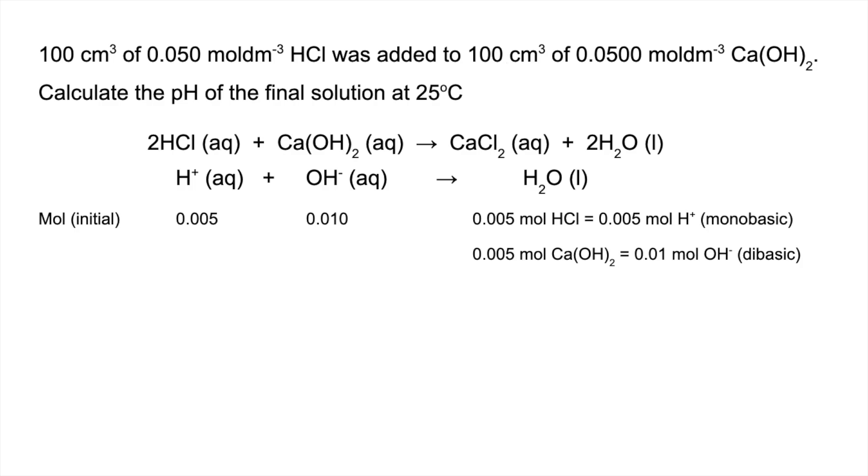So the final moles are going to be 0 of H+ and 0.005 moles of OH-. And because the OH- ions are in excess we need to use KW to get the H+ concentration. So we'll turn those moles of OH- ions into a concentration by dividing by the total volume, plug it into the rearranged KW expression to get the H+ concentration.